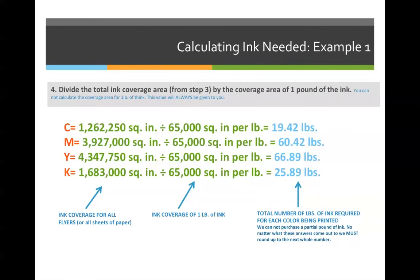Step four, we're going to calculate the exact number of pounds of ink we need. So we take the number of square inches that we need for the entire job and divide by the ink spread or ink coverage. In this case, it's 65,000 square inches. So 1,262,250 square inches of cyan divided by 65,000 square inches per pound means we need to purchase 19.42 pounds of cyan ink. The other correct answers are: magenta 60.42 pounds, yellow 66.89 pounds, black 25.89 pounds.